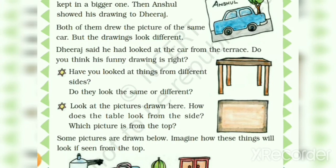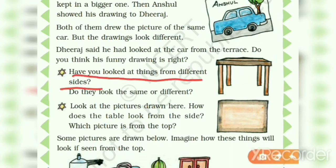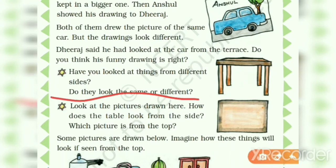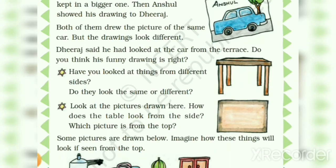You can write the answer in your textbook also. Now the next question: Have you looked at things from the sides? Yes, we all see different things from different sides. Do they look the same or different? We all know all things look different from different sides. Here you have to write the answer like this.